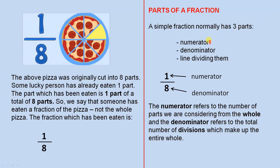The numerator, the denominator and the line dividing them. So there is the numerator of the fraction referring to the pizza. That's one part. The eight is the denominator which means the pizza has been cut up into eight equal parts.